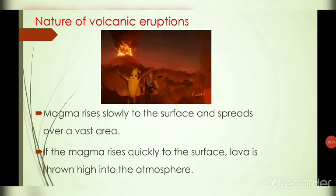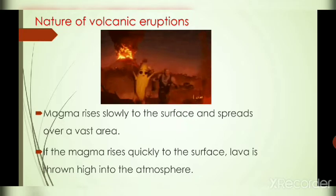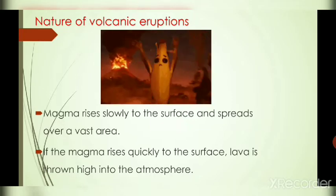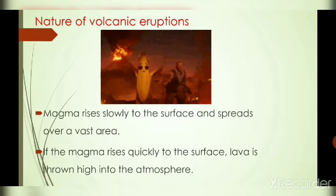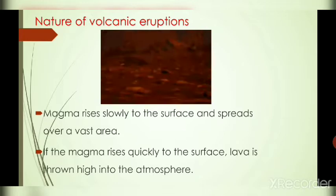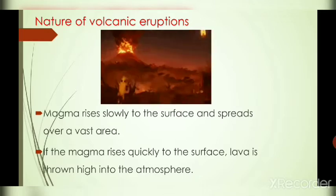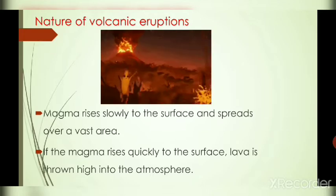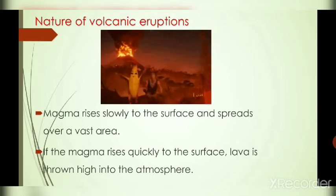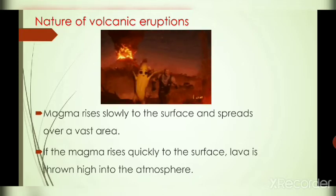Next, we are going to see the nature of volcanic eruptions. The magma rises slowly to the surface of the earth and spreads over most of the area. When the magma rises quickly to the surface, lava is thrown high into the air due to temperature. Not only lava — ash, steam, gases, and pieces of rock also reach the surface of the earth. This type of eruption is known as explosive eruption, which means a burst eruption.